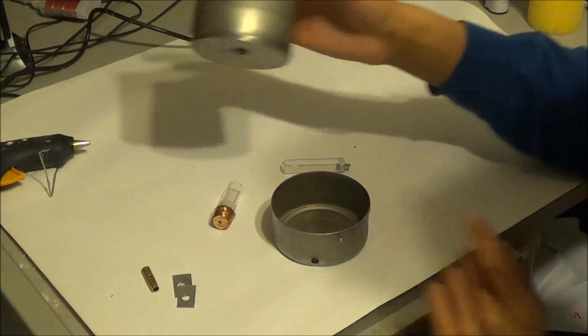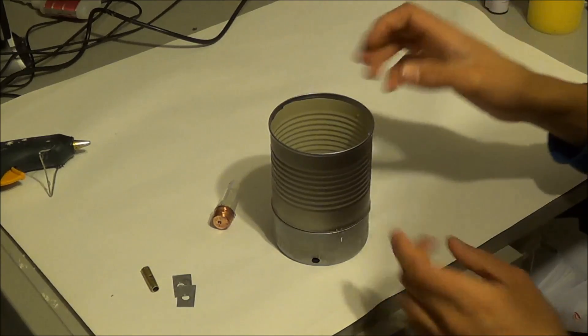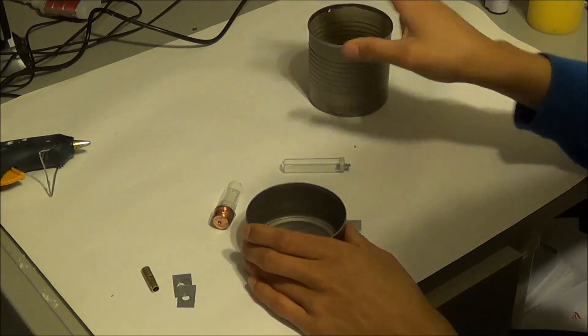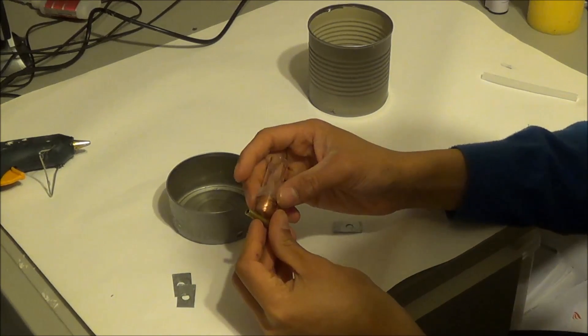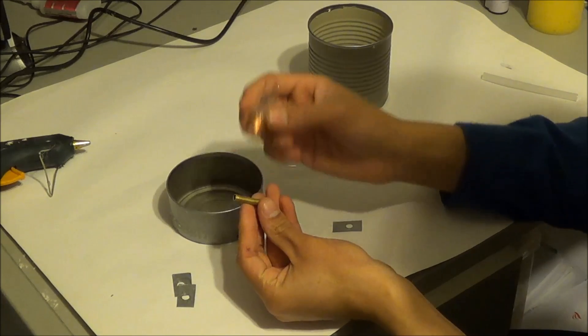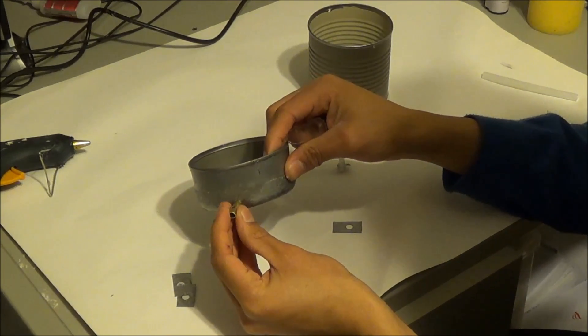Next, well what we don't want to do is we don't want to attach this to here yet because we still need the displacer piston inside. So let's attach the power piston. To attach the power piston, I'll start off by gluing this to this right here to my little brass tube and poking the brass tube in here.